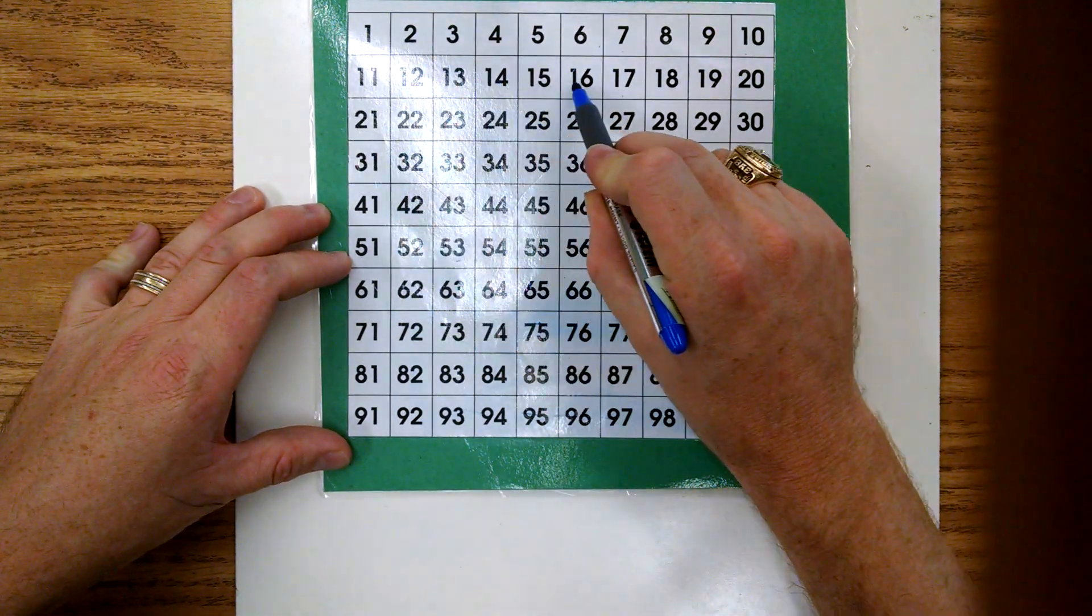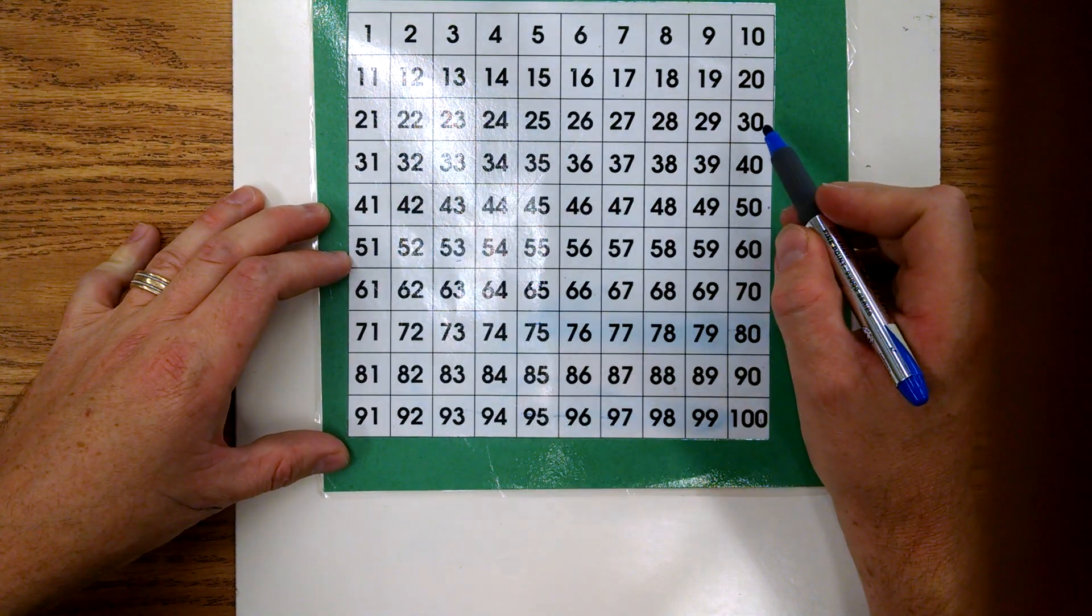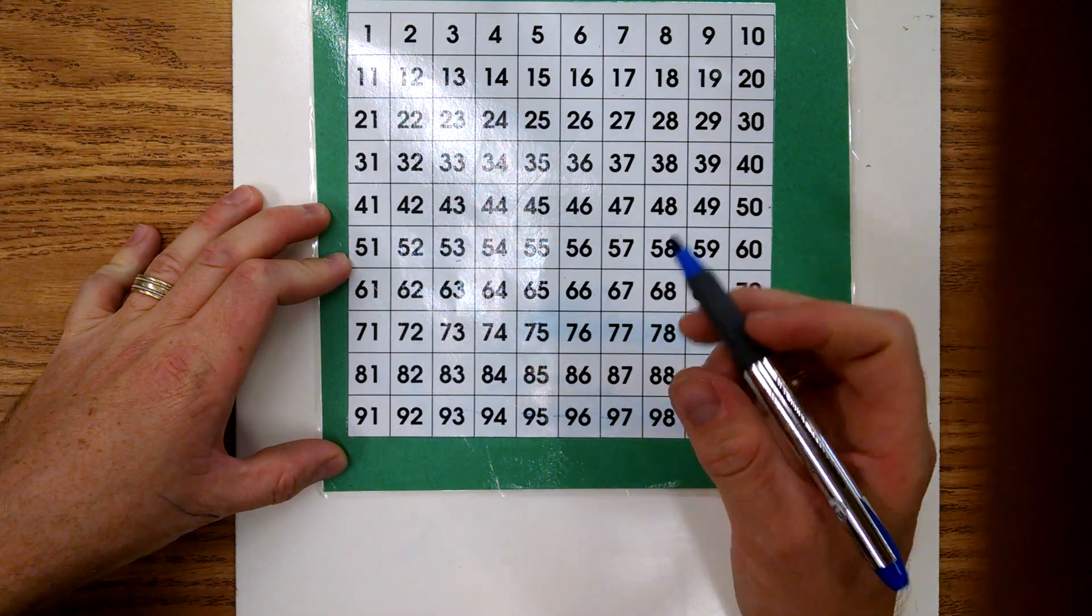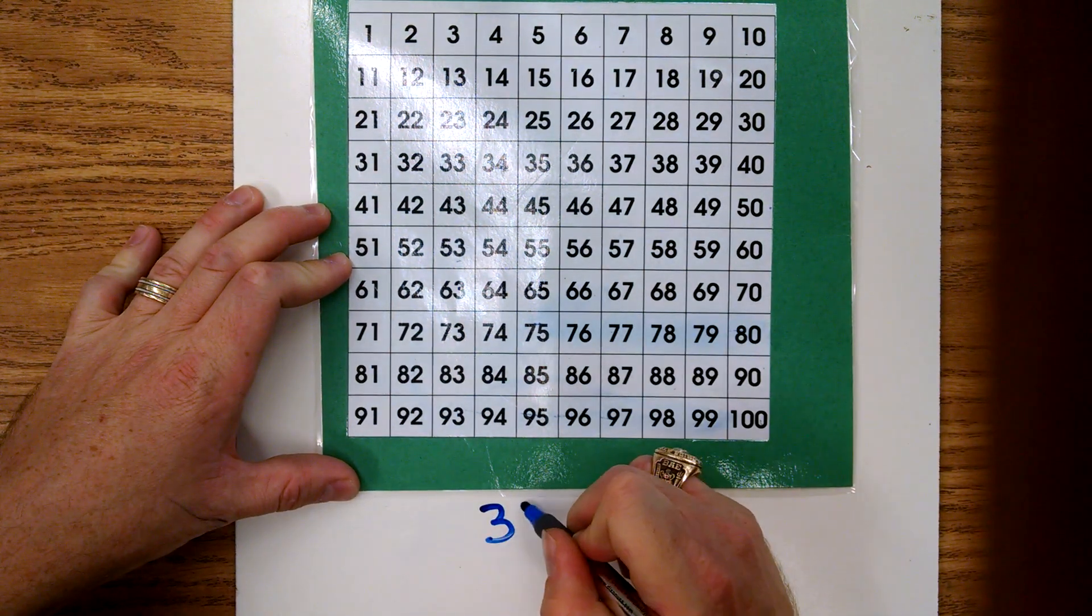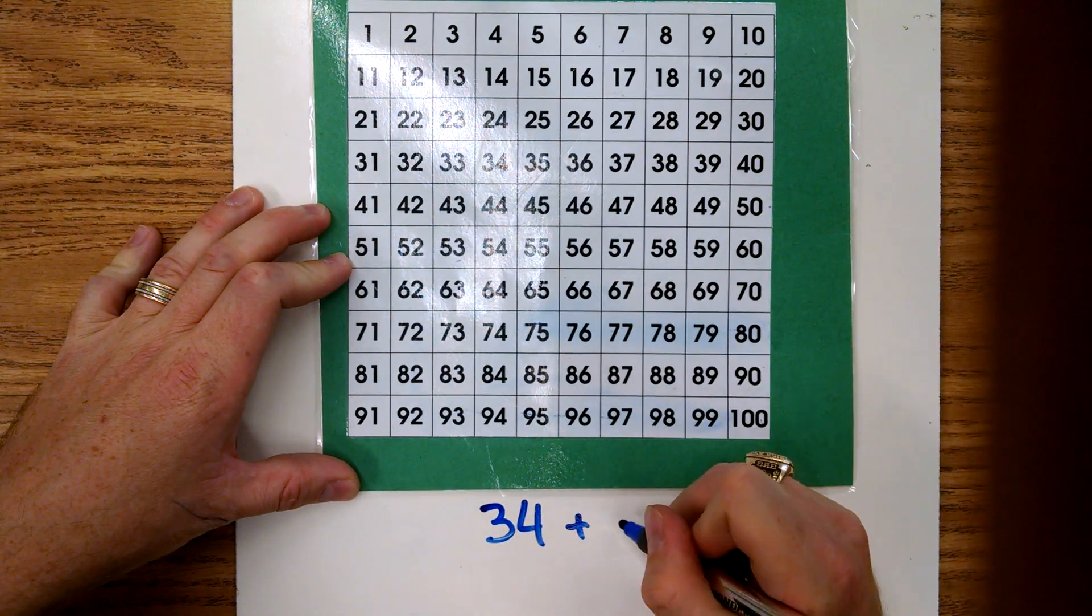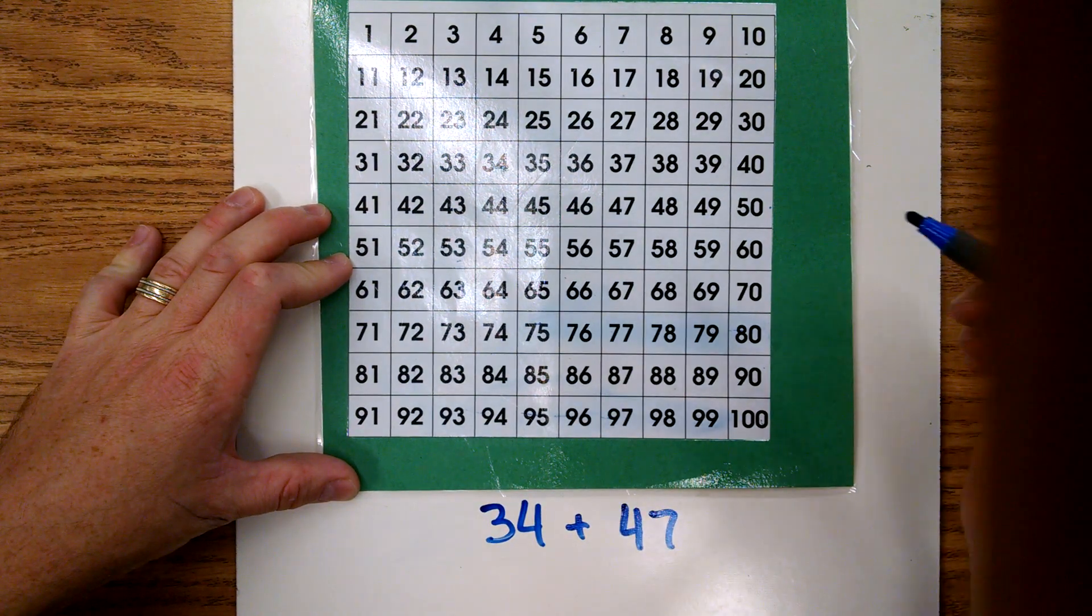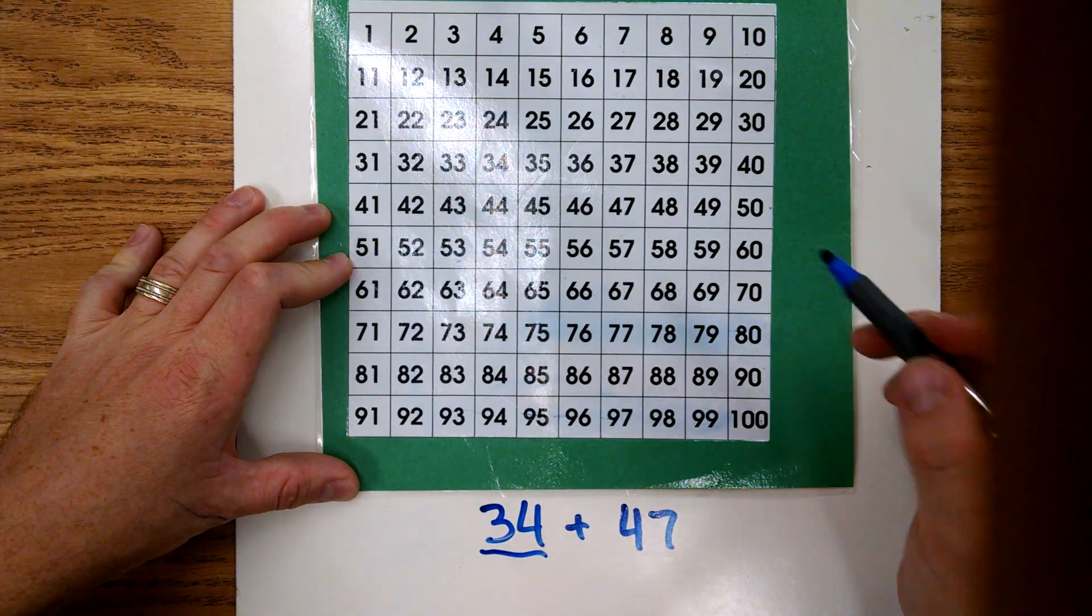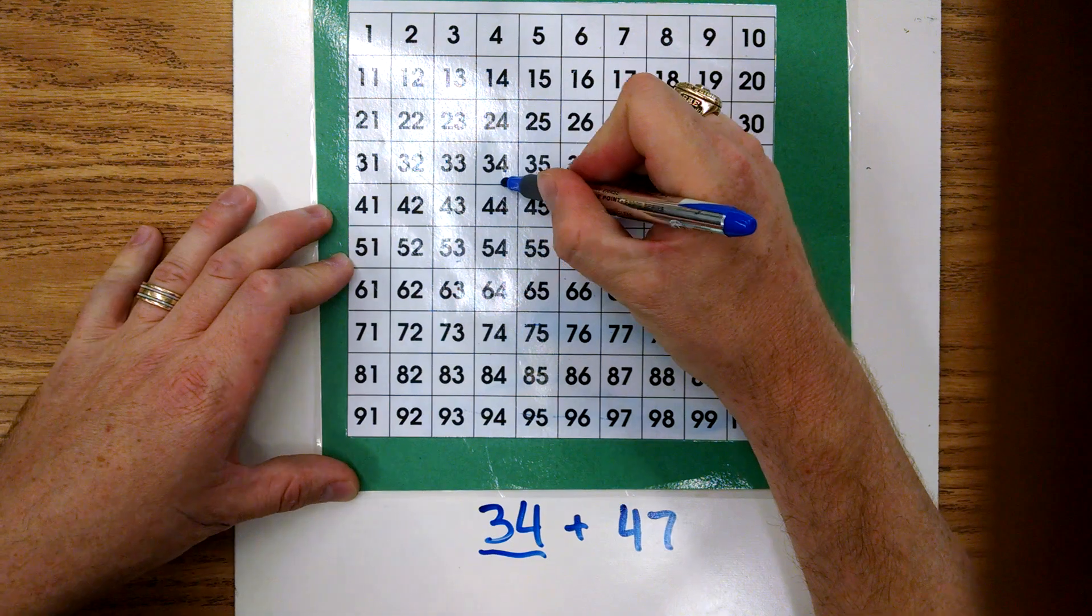So let's start with the number 34. Let's add 47 to it. First thing we need to do is go to the number that we're starting with, 34. Next thing we're going to do is in our number 47 we have four tens and seven ones.